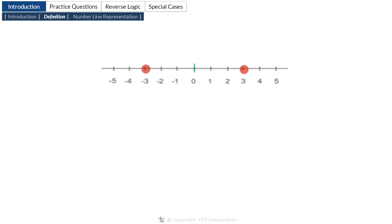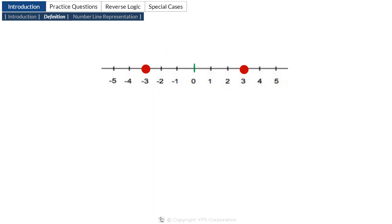Let's mark the points 3 and minus 3 on the number line. Now what is the distance of 3 from 0? It is 3 units. What is the distance of minus 3 from 0? This distance is also 3 units. Please note that we don't say that the distance of minus 3 from 0 is minus 3 — some students do make that mistake. Now the numbers 3 and minus 3 may be located in opposite directions but they are both located at the same distance from 0.